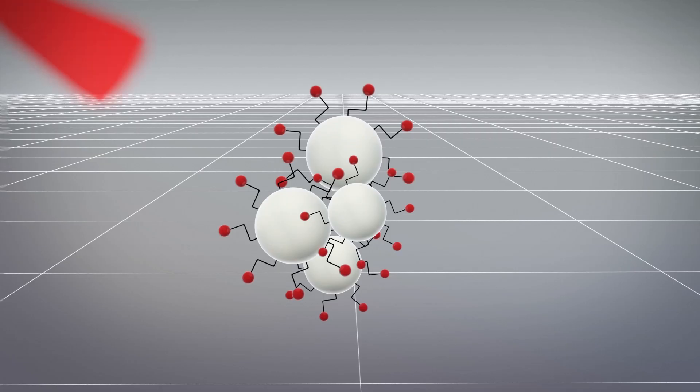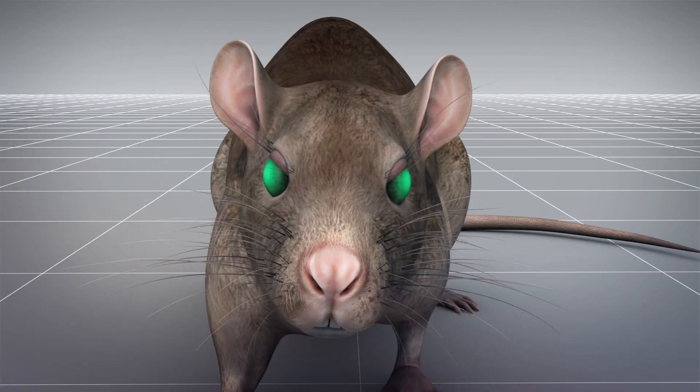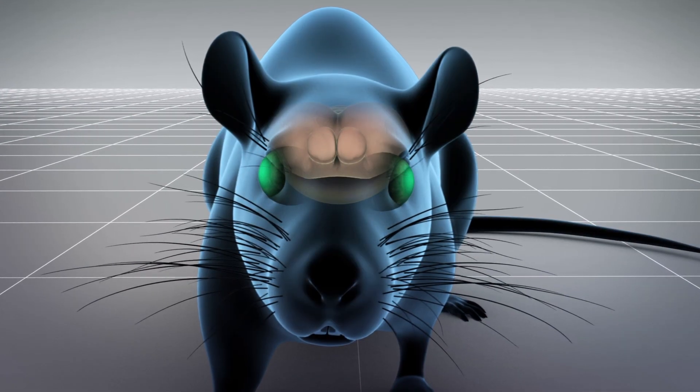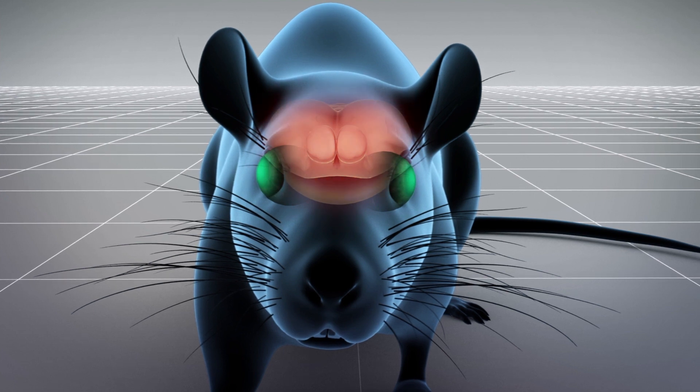The nanoparticles do this by capturing the longer infrared wavelengths and sending out shorter wavelengths in the visible spectrum. This is then absorbed by a rod or a cone which then sends a signal to the brain, tricking the brain into believing that visible light has hit the retina.